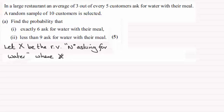So we can say where X is distributed binomially, we've got 10 trials and the probability of success, that is asking for a drink, is 3 fifths. 3 out of every 5 then ask for water.